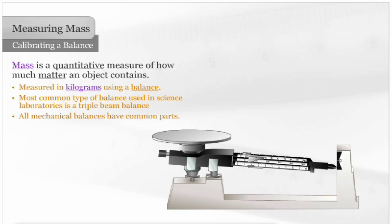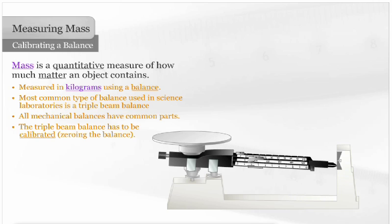In order to make accurate measurements, the triple beam balance has to be calibrated before determining the mass of an item. This process is called zeroing the balance.